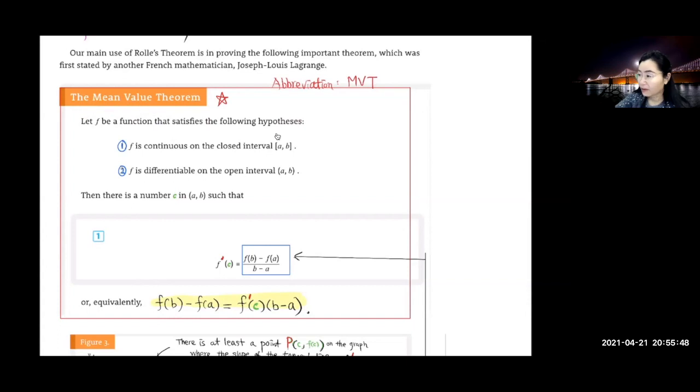In our last video, we went over the Mean Value Theorem. It says that if f is a function that satisfies these two hypotheses: